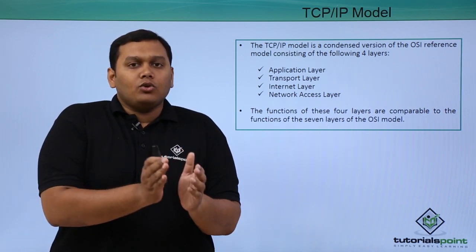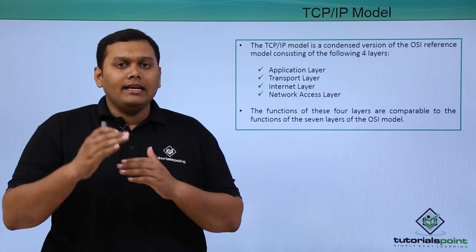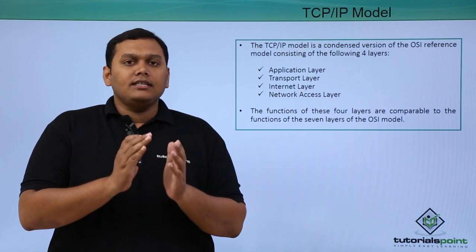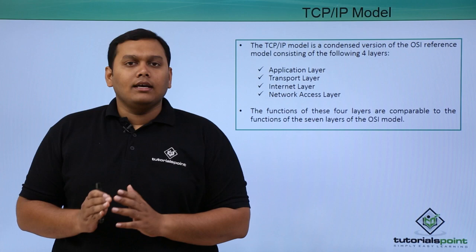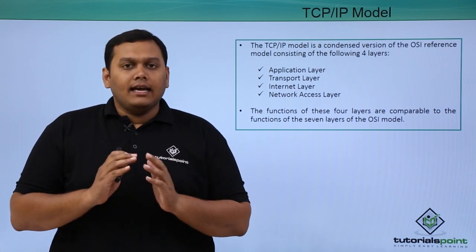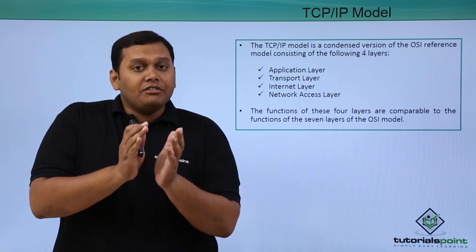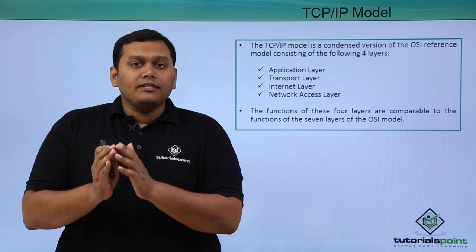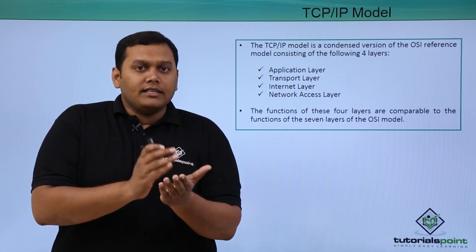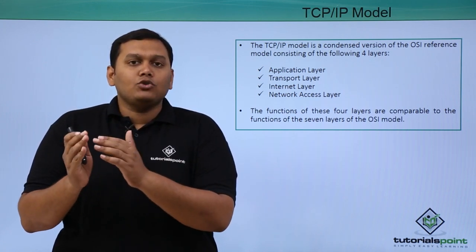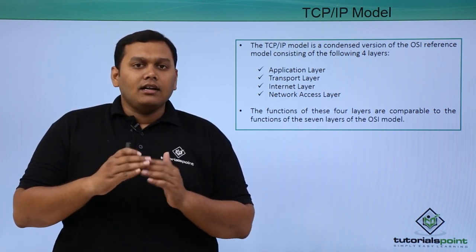The TCP/IP model is a condensed model of the OSI model and it consists of only four layers. TCP/IP stands for Transmission Control Protocol and Internet Protocol. It was first developed between 1973 and 1985, during which the Defense Research Projects Agency developed it as a project.